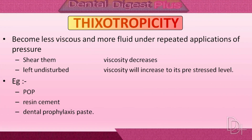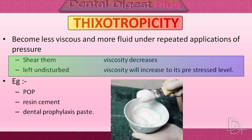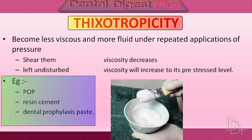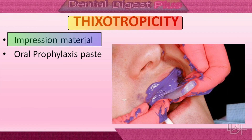Thixotropicity is a property exhibited by certain liquids that become less viscous and more fluid under repeated applications of pressure. When sheared, their viscosity decreases, and when left undisturbed, viscosity returns to its pre-stress level due to structural breakdown and reformation. Examples include POP, resin cement, and dental prophylaxis paste. Impression material flows when placed in tissues and pressure is applied, but does not flow out of the impression tray until placed over dental tissues.